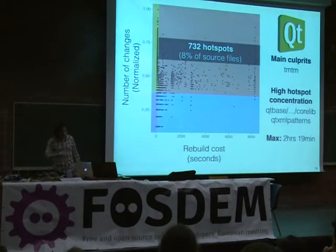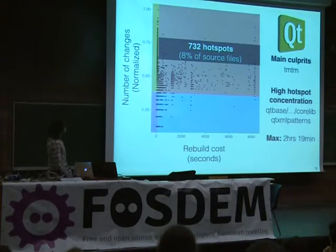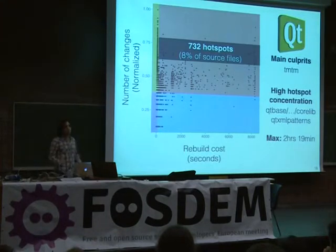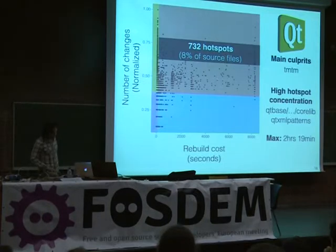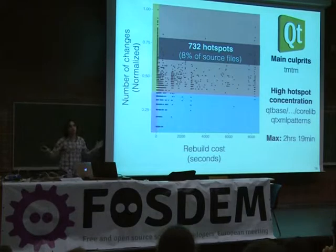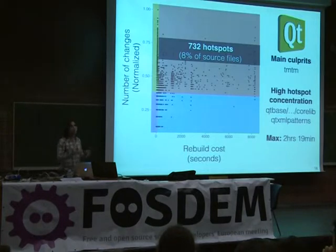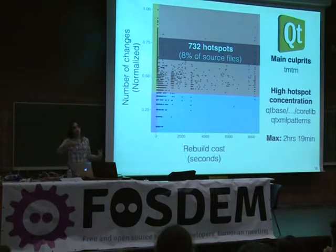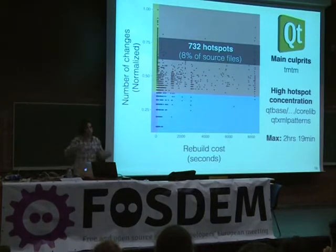Turning to the Qt system — the biggest one we looked at — we said, 'oh boy, they're in some pretty serious trouble.' There are some files that take more than two hours to rebuild. So if you're unlucky enough to have touched one of those files, you'd better go for lunch before you can keep working. With 732 hotspot files in a system we weren't really familiar with, we instead looked at hotspot concentration in directories and identified some directories with abnormally high hotspot concentration. The core library shows up, as well as the XML patterns module used to parse XML.